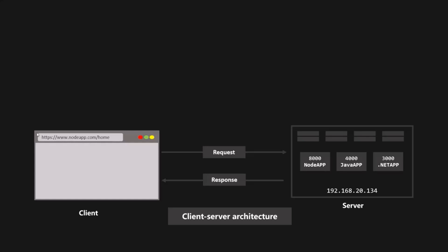The first thing to understand is that the domain name we type in the address bar — for example, google.com, facebook.com, or nodeapp.com — is not the real address of the server we are trying to access. It's just a nice name that is easy for us to remember. In reality, the server does not have a name; it has an IP address, such as 192.168.20.134.